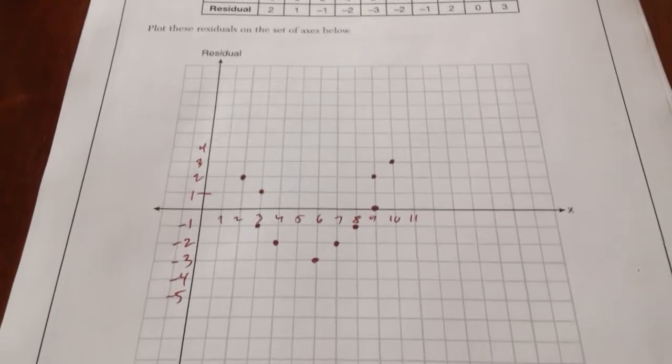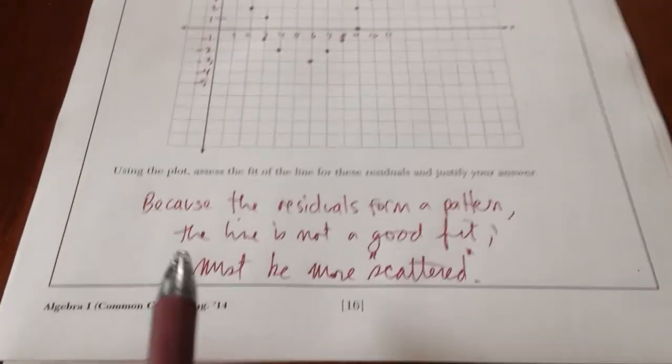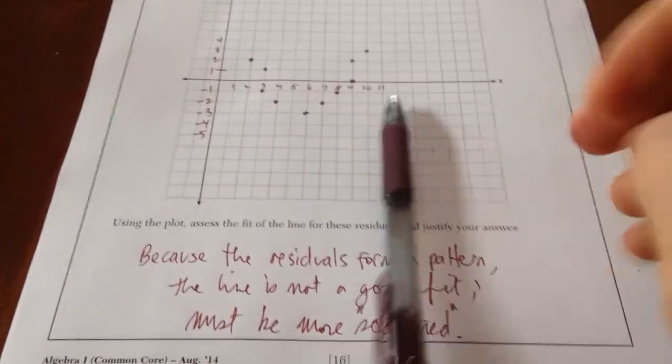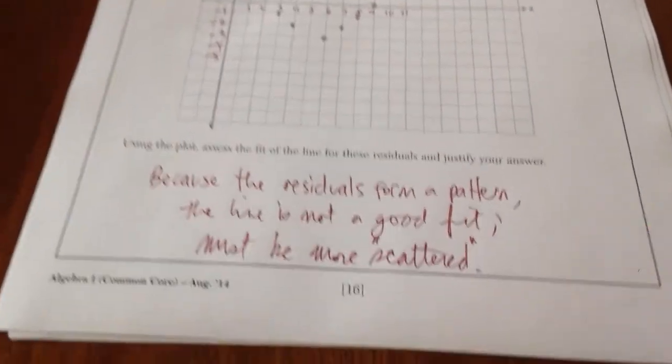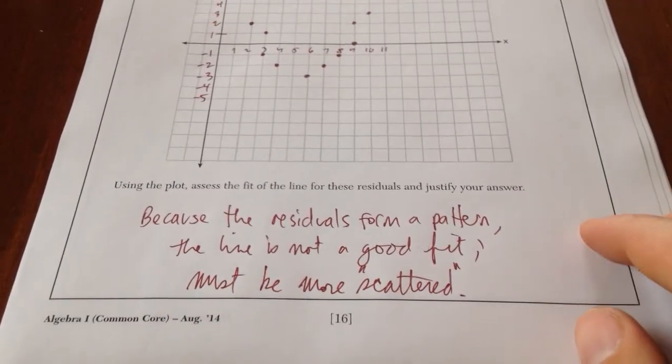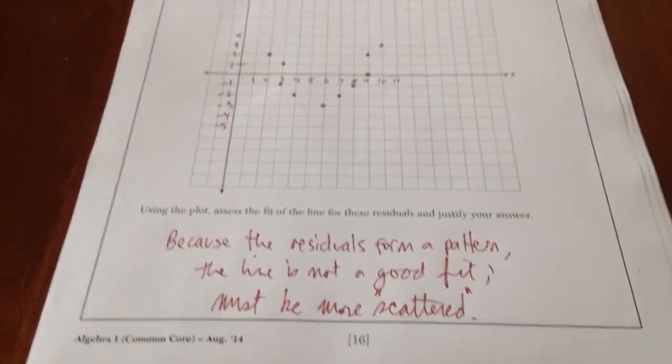So it looks like our residuals kind of form a parabola. Because the residuals form a pattern, kind of like a parabola, the line is not a good fit. It must be more scattered. This will get you full credit.